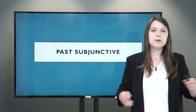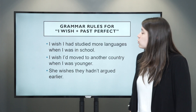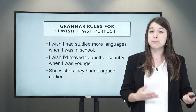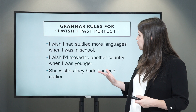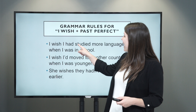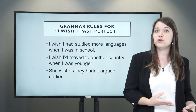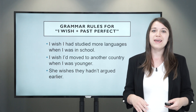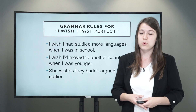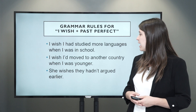Now that we've looked at the present subjunctive, let's move on to the past. We can use 'I wish' again, but in the past subjunctive we use the past perfect tense — 'I wish' plus past perfect. For example, 'I wish I had studied more languages when I was in school.' This is something where you've already finished school and cannot change the past, so it's a regret. This is when we express our regrets.